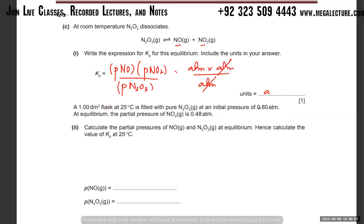The unit for Kp is atm. Now, a 1 dm³ flask at 25°C is filled with pure N₂O₃ at an initial pressure of 0.6 atm. At equilibrium, the partial pressure of NO₂ is 0.48 atm. Calculate the partial pressure of NO and N₂O₃ at equilibrium, then calculate Kp.